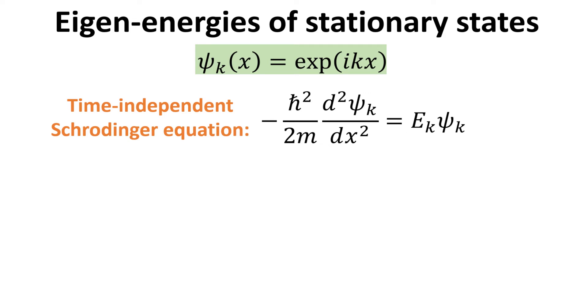Each eigenfunction psi_k to the time-independent Schrödinger equation has a corresponding eigenenergy E_k. We index each pair of these eigen solutions with k.